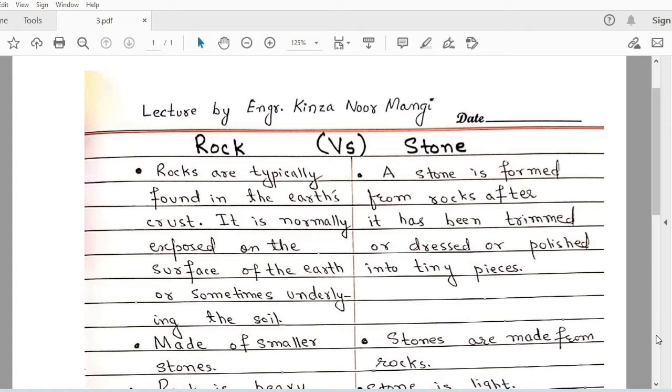Here are the major differences between rock and stone. We will discuss it one by one. Rocks are typically found in the earth's crust. It is normally exposed on the surface of the earth or sometimes underlying the soil. Stone: a stone is formed from the rocks after it has been trimmed or raised or polished into tiny pieces. So basically stone is the piece of the rock.